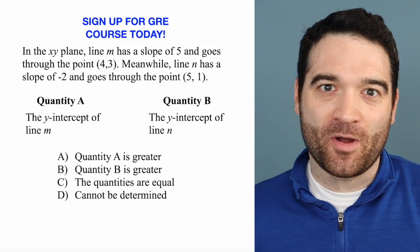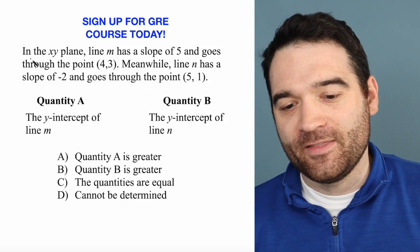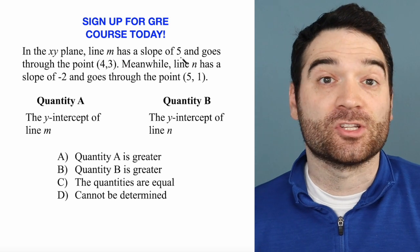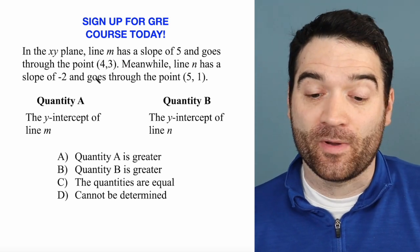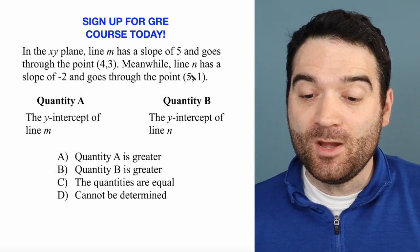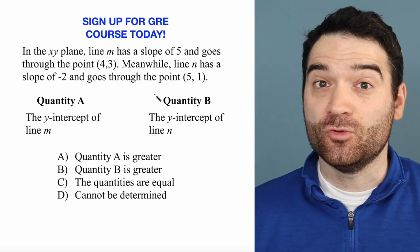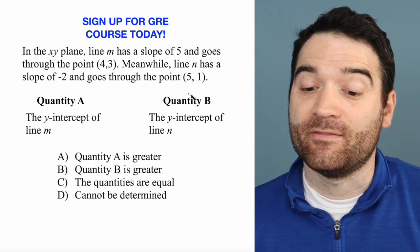Here's a GRE coordinate geometry question. Let's take a look. In the XY plane, line M has a slope of 5 and goes through the point (4, 3). Meanwhile, line N has a slope of -2 and goes through the point (5, 1).